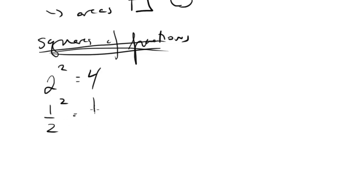You're going to get 1 half squared is 1 over 4. And we know that 1 half is greater than 1 fourth. So when you square a fraction, you're actually getting a smaller number at the end. So 1 fourth squared is going to be 1 over 16.